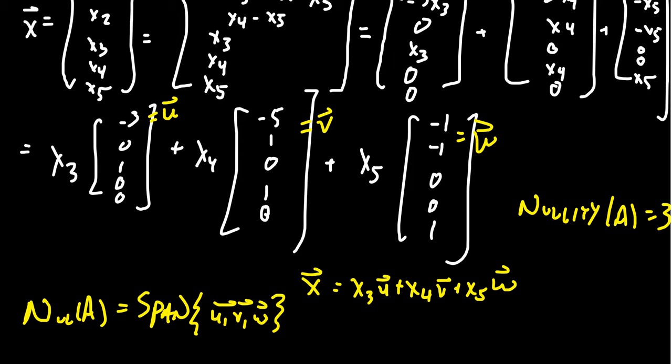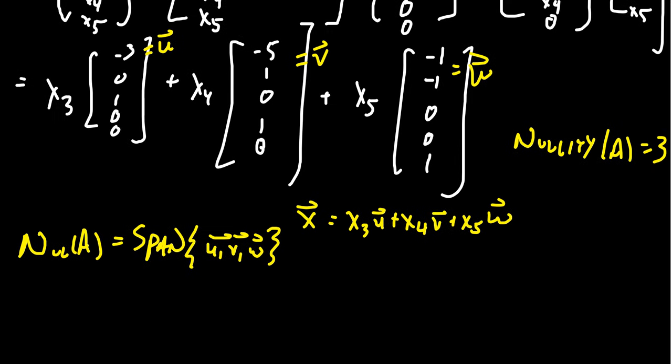So we do, in fact, have an independent set of vectors which span the null space. So this gives us a basis for the null space. And it turns out in the process of solving homogeneous systems, we actually were already finding bases for the null space. But it turns out we can dramatically simplify this process.